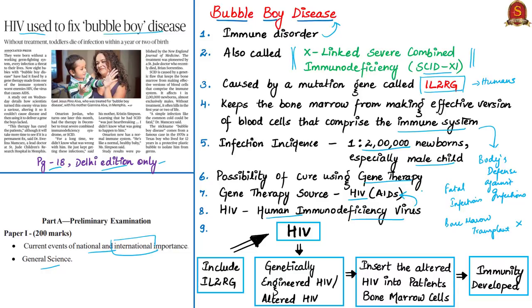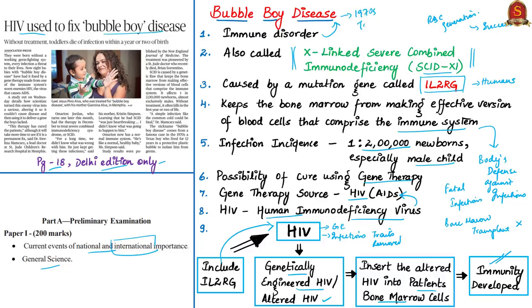Scientists have tried to cure bubble boy disease using gene therapy that uses HIV to deliver the gene inside the human body. HIV — human immunodeficiency virus, which causes AIDS — has its infectious strains removed. The HIV is then genetically engineered by adding the IL2RG gene that the kids lack, making it an altered HIV. This altered HIV is inserted into the patient's bone marrow cells, and the kids slowly start developing immunity through generation of effective blood cells. This gene therapy has been declared successful. The nickname 'bubble boy disease' comes from a famous 1970s case of a Texas boy who lived for 12 years in a protective plastic bubble to isolate him from germs.